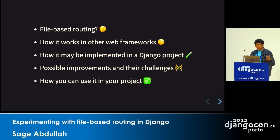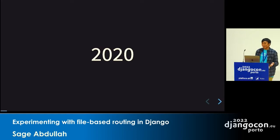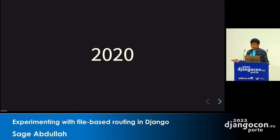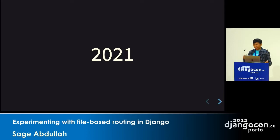Before I continue, I'd like to take a step back to 2020. If the year were 2020 and COVID didn't happen, I would be standing here to talk about the new cross-database JSON field feature in Django 3.1, which was just released in August. But that's not the universe that we live in. It was 2021 — I graduated from university with my bachelor's degree.